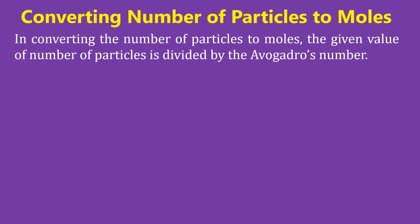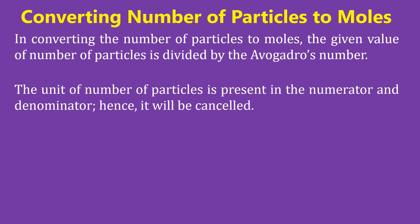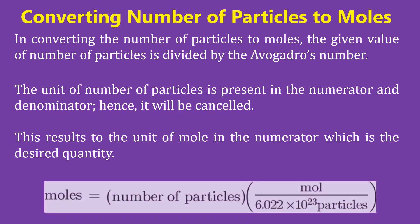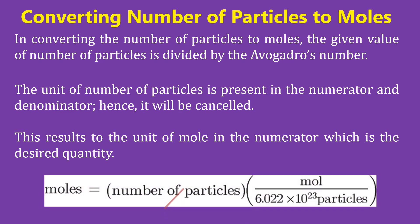In converting the number of particles to moles, the given value of number of particles is divided by Avogadro's number. The unit of number of particles is present in the numerator and denominator and will be cancelled. This results in the unit of mole in the numerator, which is the desired quantity. Moles = number of particles × (mole ÷ 6.022 × 10²³ particles).